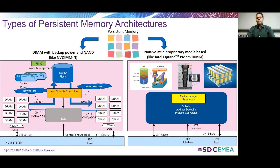The architecture on the right-hand side uses non-volatile proprietary media, as seen in Intel Optane persistent memory DIMMs. This architecture does not require a backup power, as the media itself is capable of retaining data when power is lost. However, due to the proprietary nature of the media, the controller also has to be proprietary because it must manage buffering, address decoding, and protocol conversion depending on the media technology used. Different examples of persistent media back-ends include magneto-resistive RAMs (MRAMs), ferroelectric RAMs (FRAMs), and various types of phase change memory technologies customized for proprietary implementations.